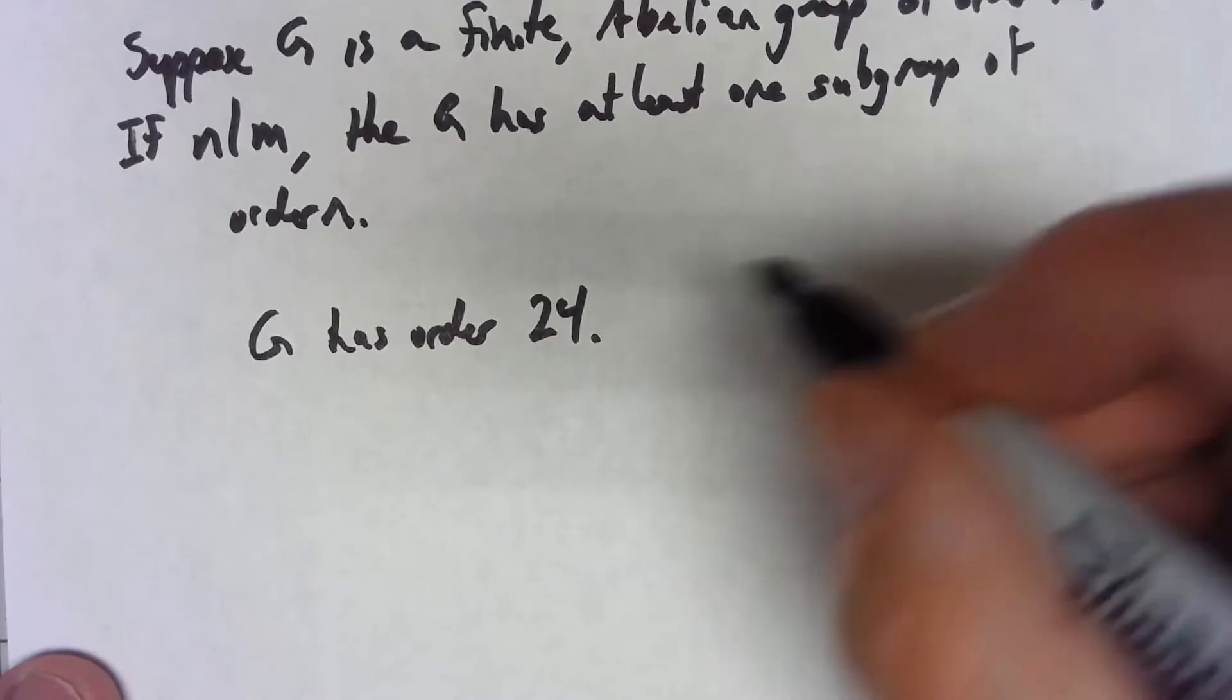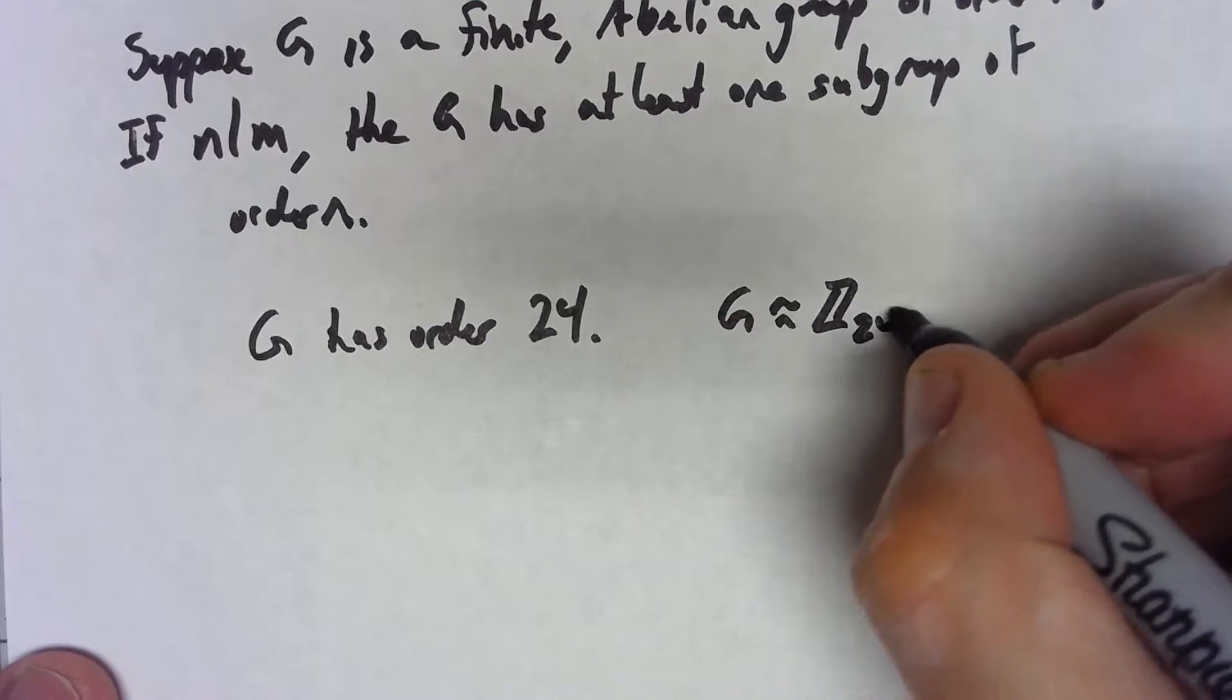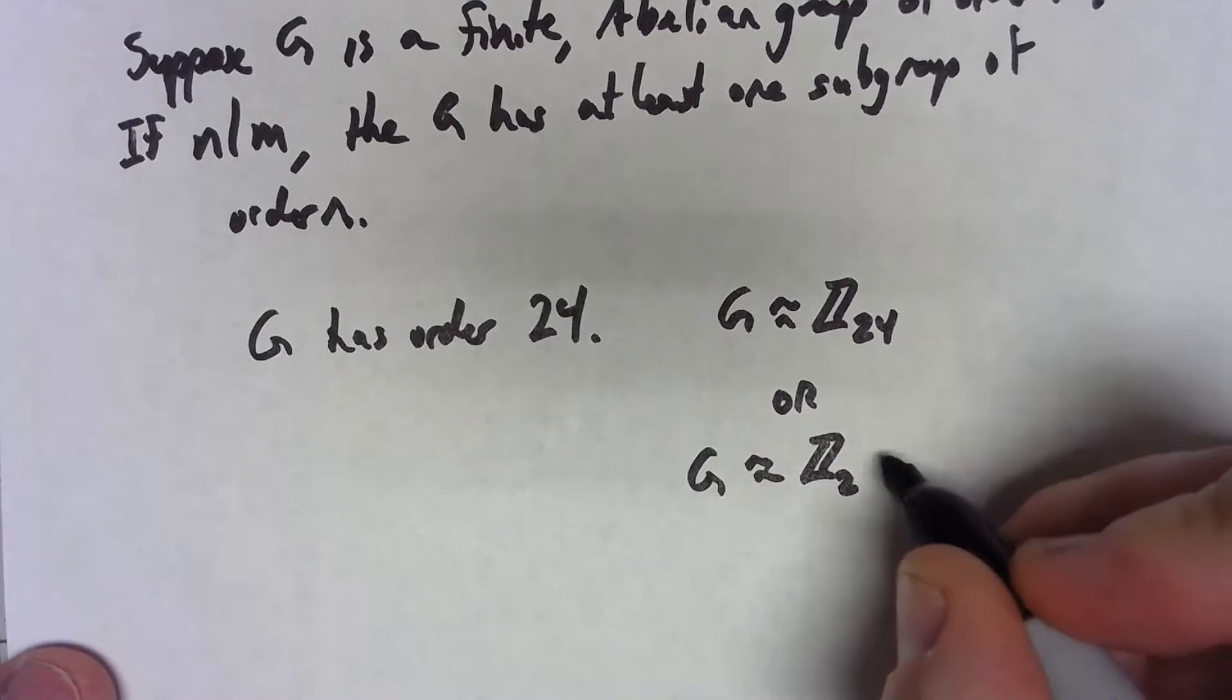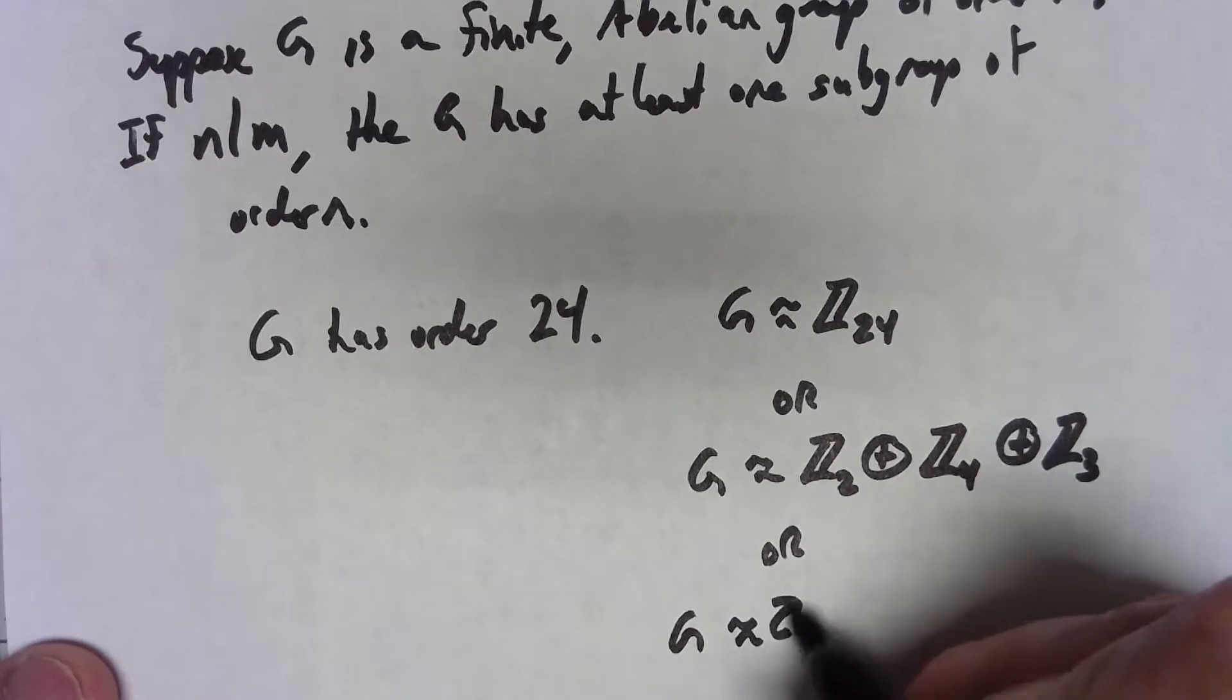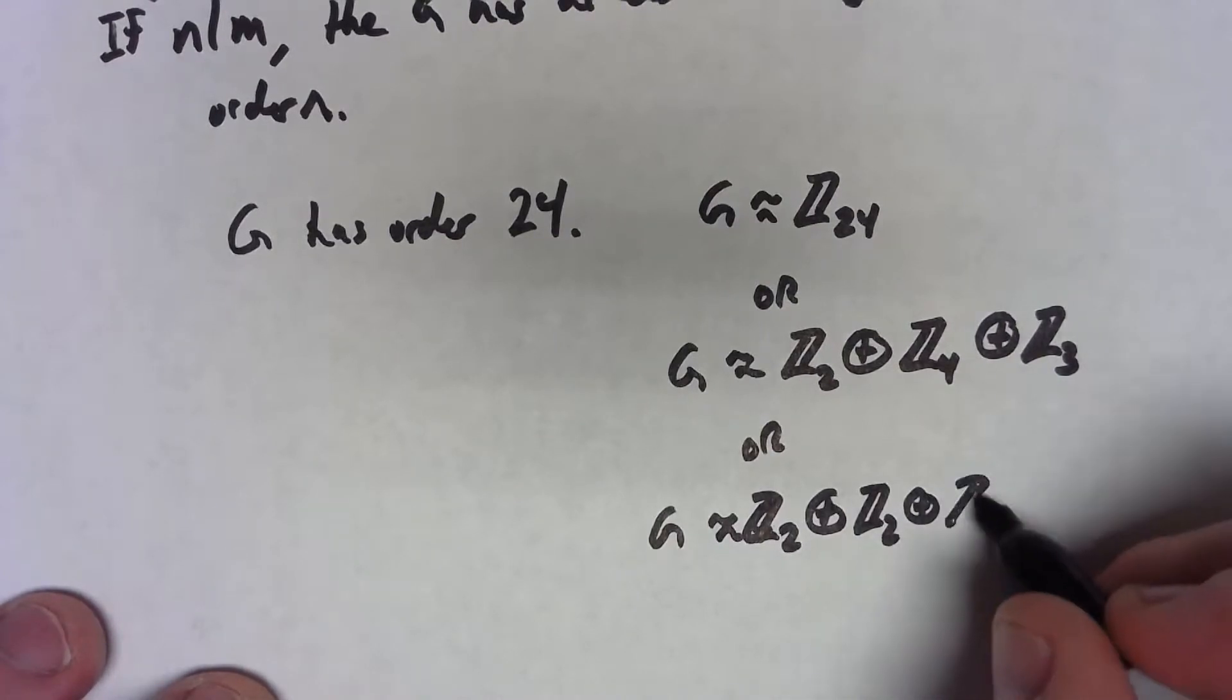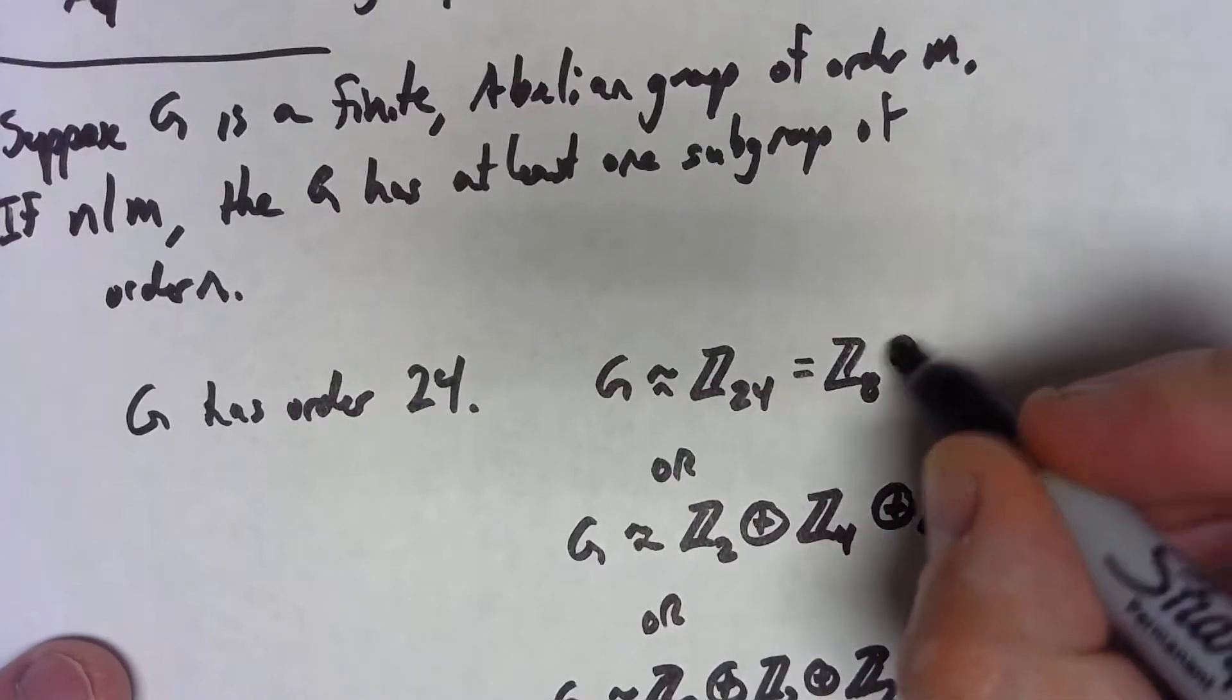We know the possibilities for what G is isomorphic to: G could be isomorphic to Z24, or G could be isomorphic to Z4 direct product Z4 direct product Z3, or G could be isomorphic to Z2 direct product Z2 direct product Z2 direct product Z3. It's also worth noting this is Z8 direct product Z3.